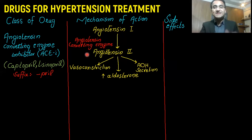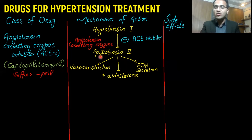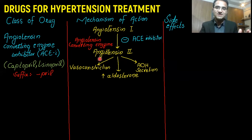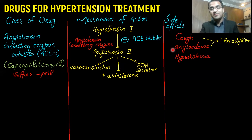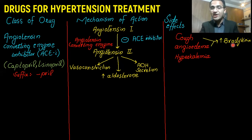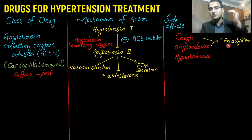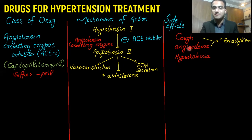With ACE inhibitors, we block the activity of this enzyme, stopping the conversion of angiotensin 1 to angiotensin 2. This leads to no vasoconstriction, no aldosterone secretion, and no ADH secretion, thereby controlling blood pressure. However, the side effects include cough and angioedema, because ACE is also responsible for the degradation of bradykinin. When we inhibit ACE, bradykinin levels become elevated, leading to cough and angioedema — cough being an important and common side effect of ACE inhibitors.